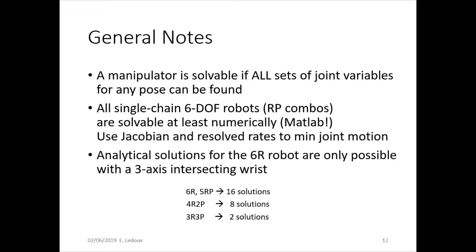Analytical solutions for the 6R robot are only possible if it has a 3-axis intersecting wrist. Because you would need to be able to get the one set of angles like theta 1, theta 2, theta 3 from the position and then the other set of angles, theta 4, 5, 6 from the orientation.